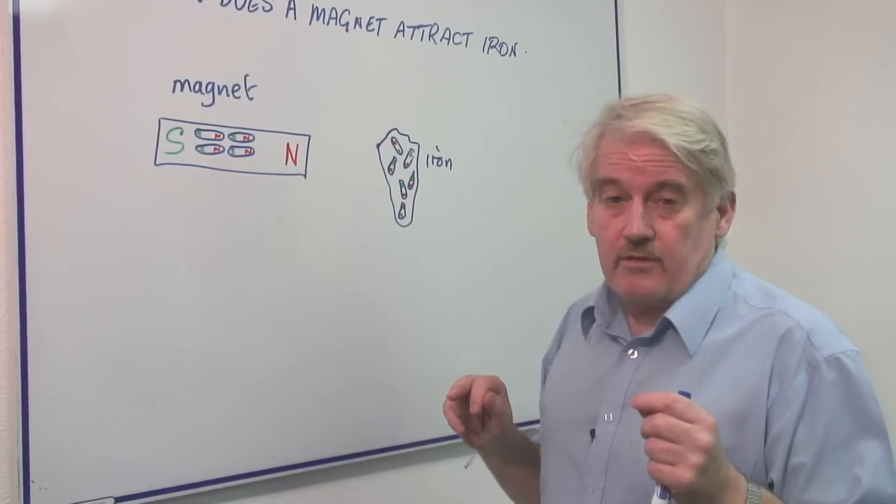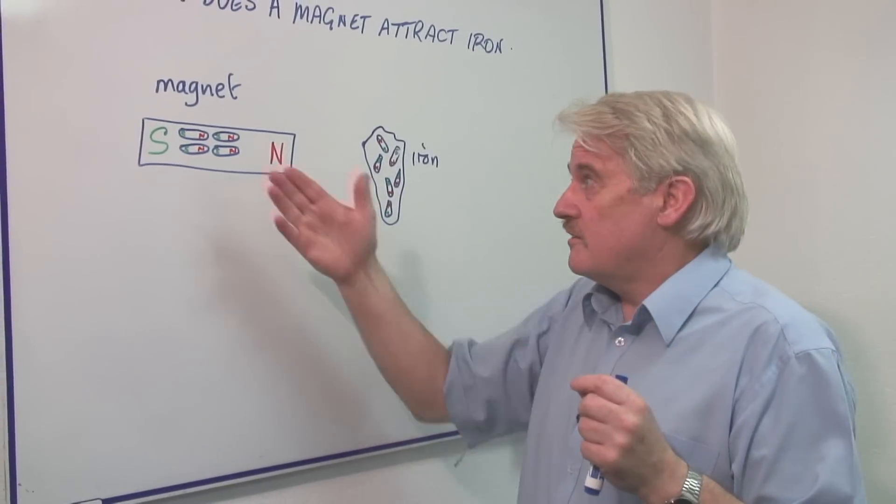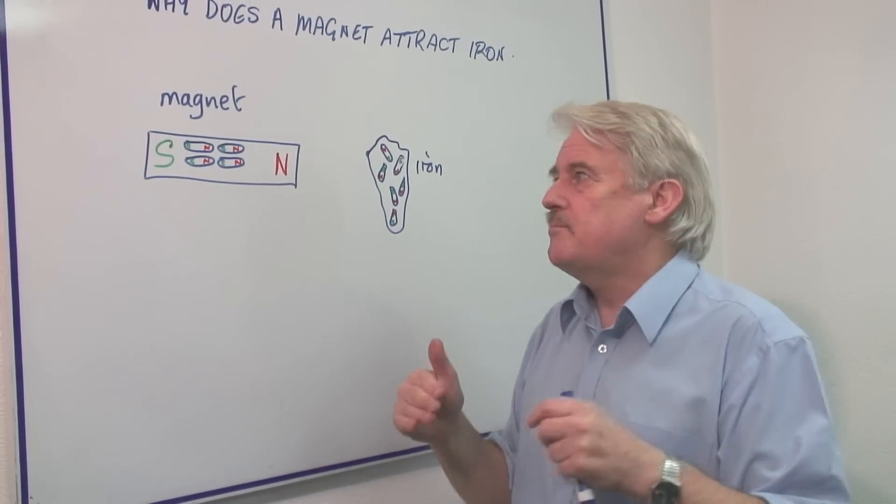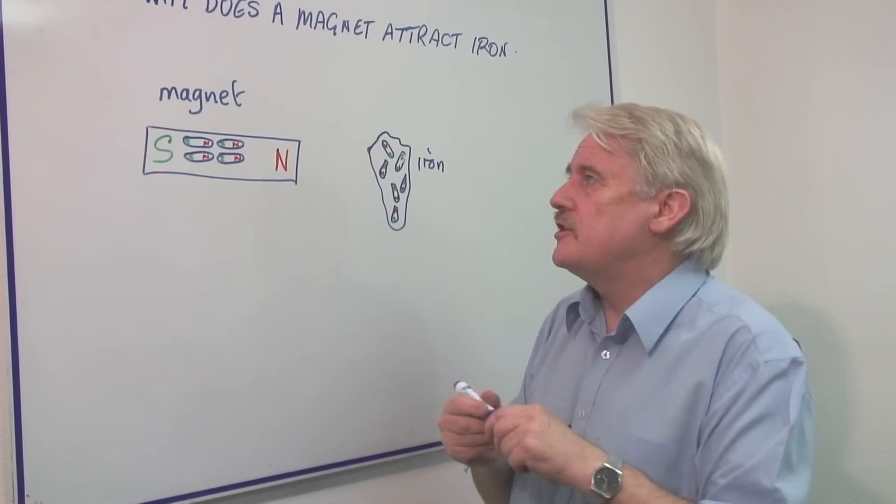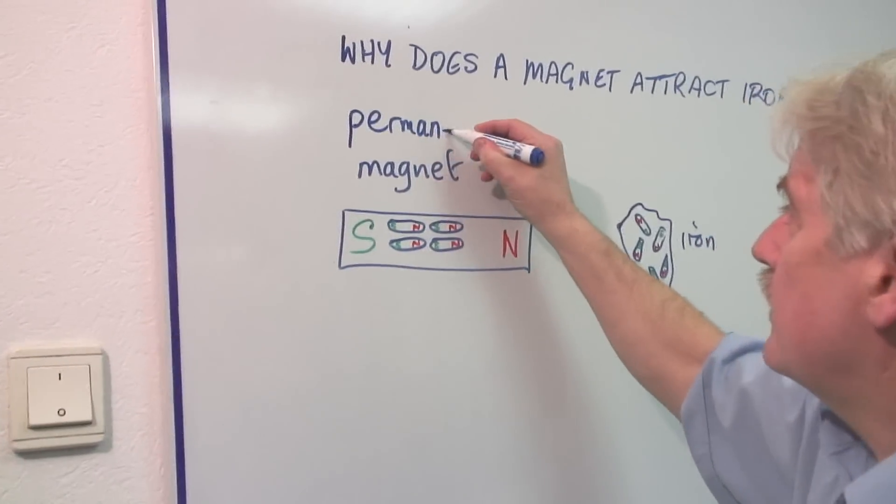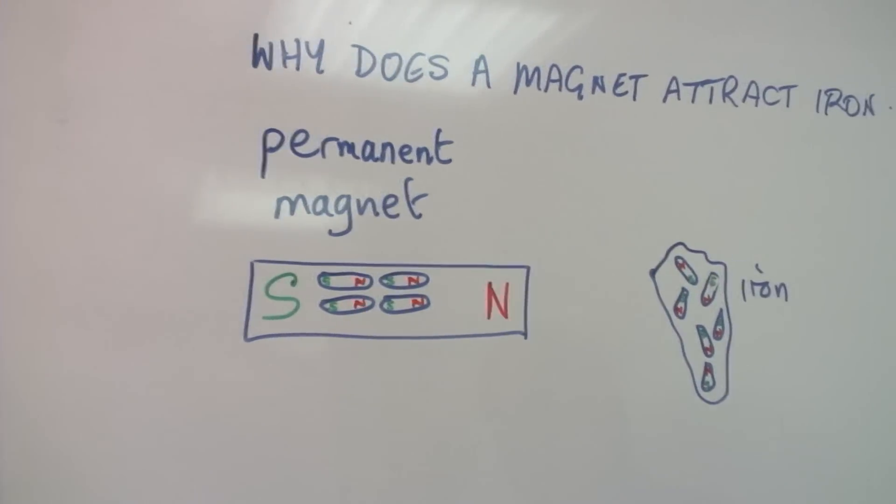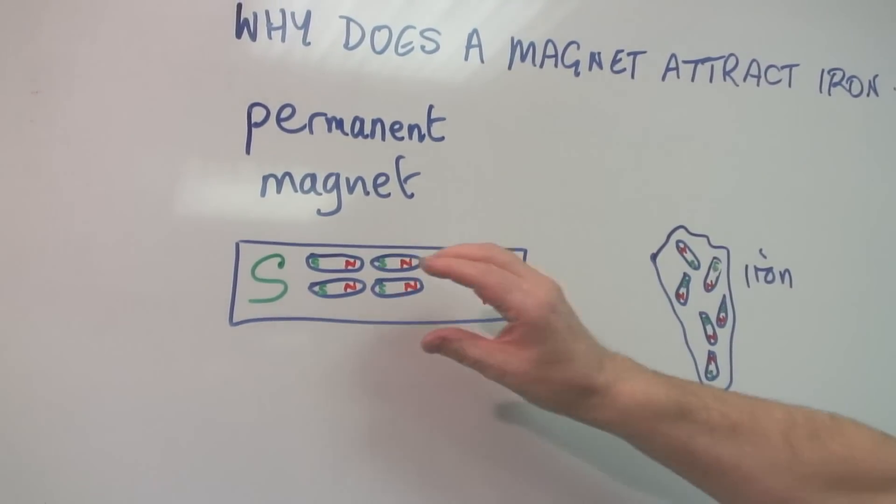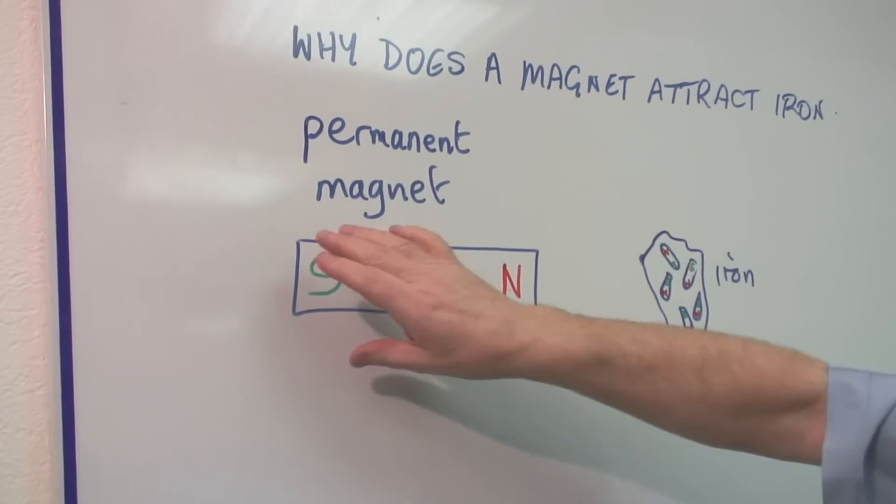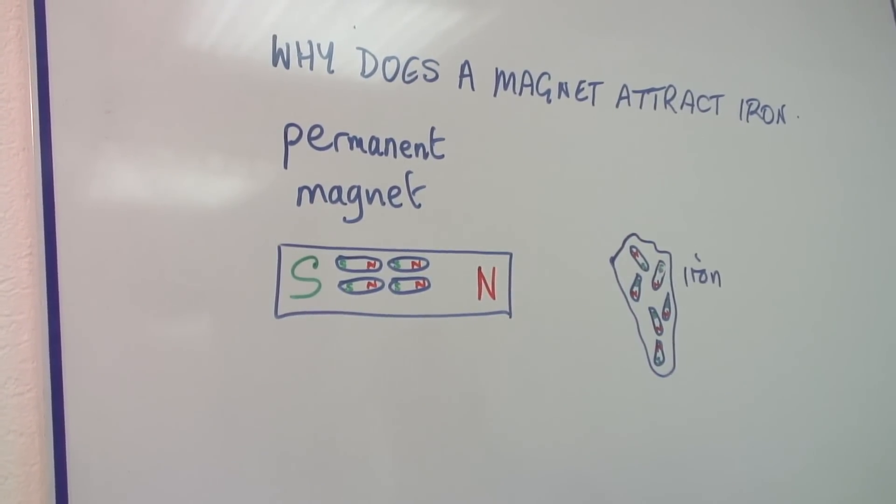And in fact, with steel you can get them lined up and they will stay lined up. And that's why it becomes what we call a permanent magnet. Because what we've done is we've made all those little magnets inside all line up. So you end up with a north pole overall at this end and a south pole overall at this end.